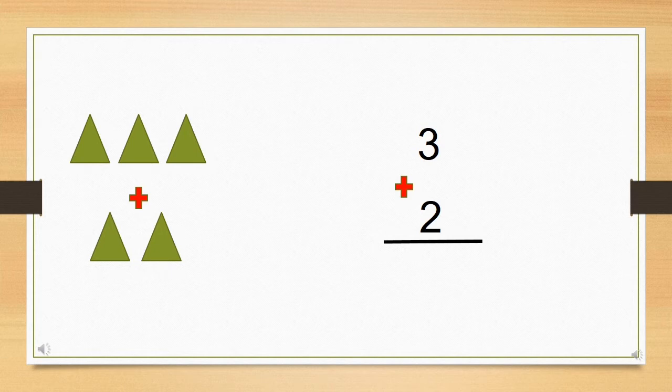Whenever we are counting, we are going to keep bigger number on our mind and smaller number on our fingers. Which is the bigger number? Yes, number three is the bigger number. So three we are going to keep on our mind and take out your two fingers. Now we are going to count next two numbers. What comes after three? Four and five. So answer will be five.